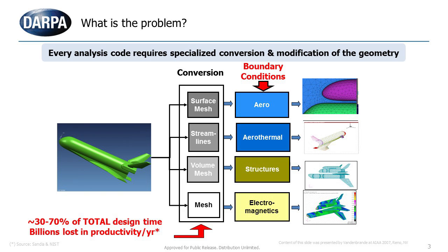It also frequently involves making modifications to the geometry — for example, removing small details like small holes, or adding geometric aids that help the computation, such as a wake field behind the wing. The conversion has to be done differently for each of the different analysis codes because they only accept their own flavor of representation.